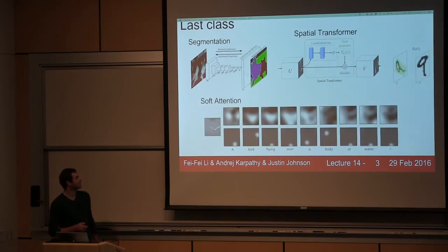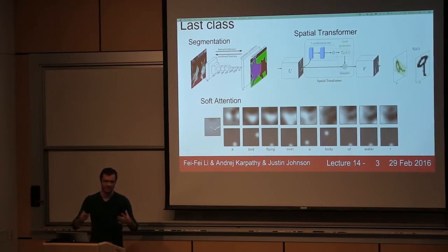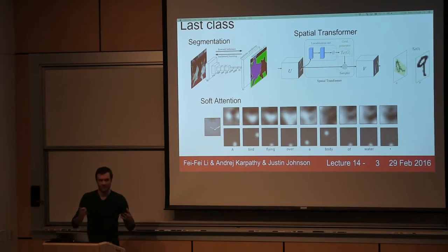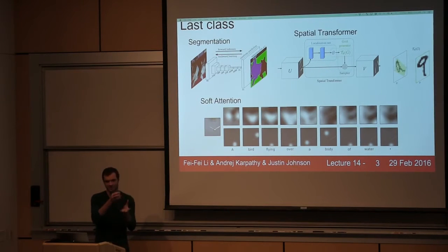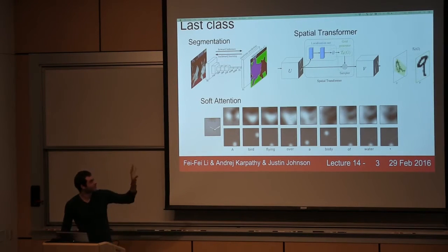In terms of reminding you where we are in the class: last class we looked very briefly at segmentation and soft attention models. Soft attention models are a way for selectively paying attention to different parts of the image as you process it with something like a recurrent neural network, allowing you to selectively enhance those features. We also talked about spatial transformer, a differentiable way of cropping parts of an image or features in an affine region or warped shape — a very interesting piece you can slot into neural network architectures.